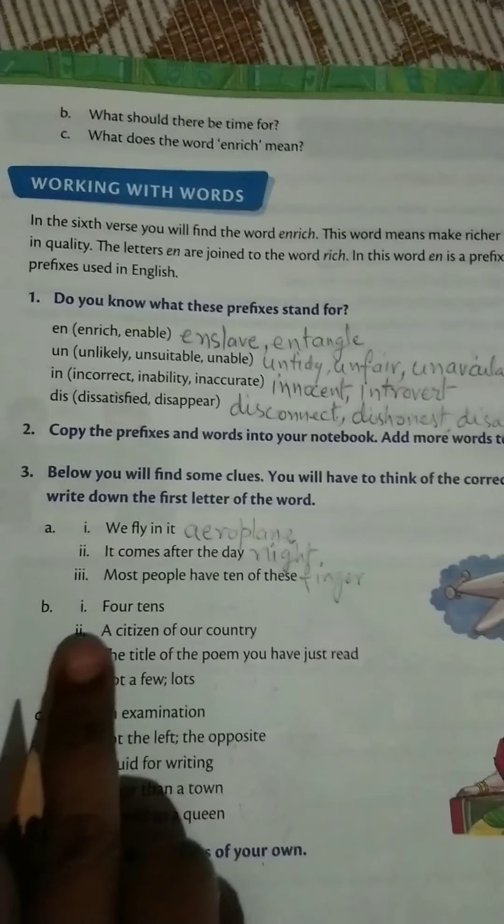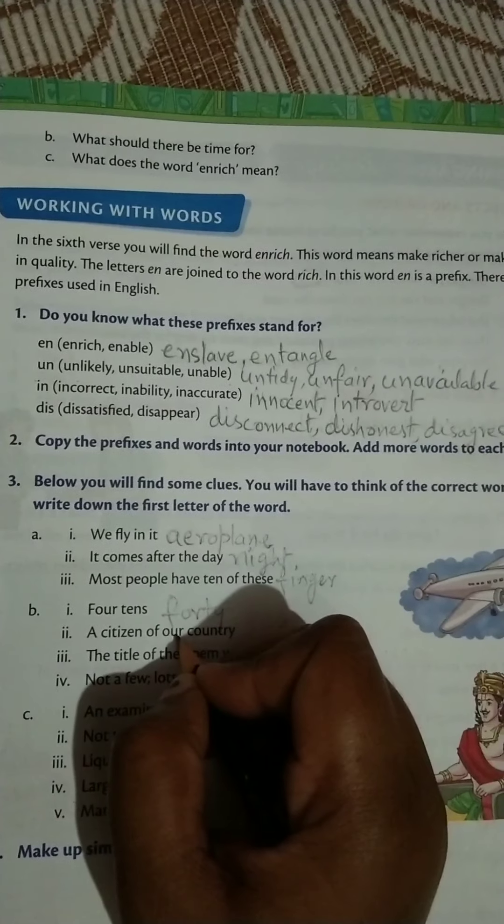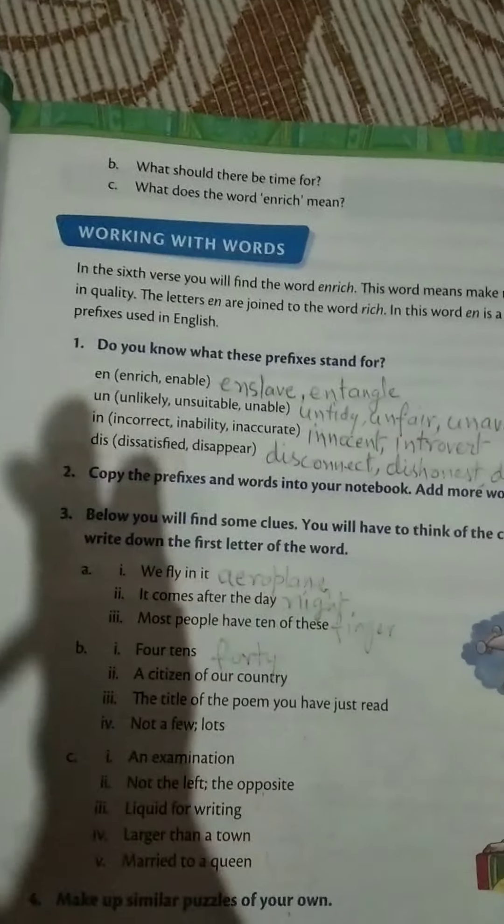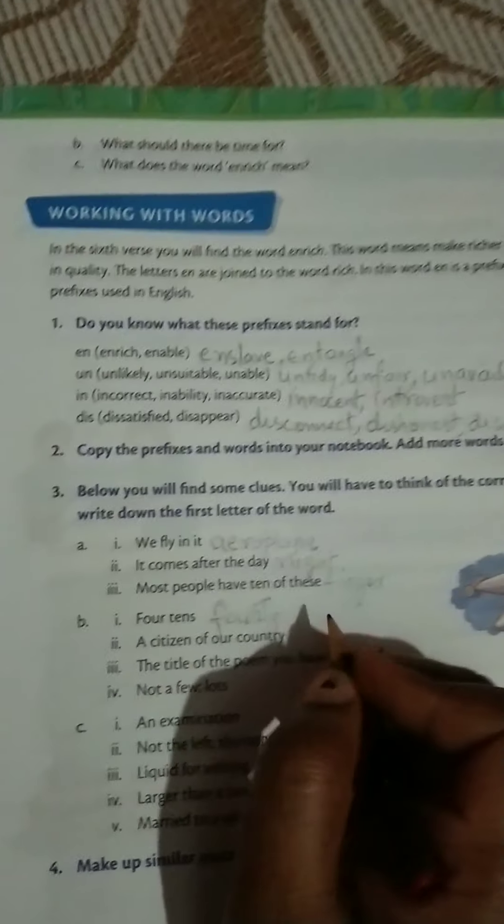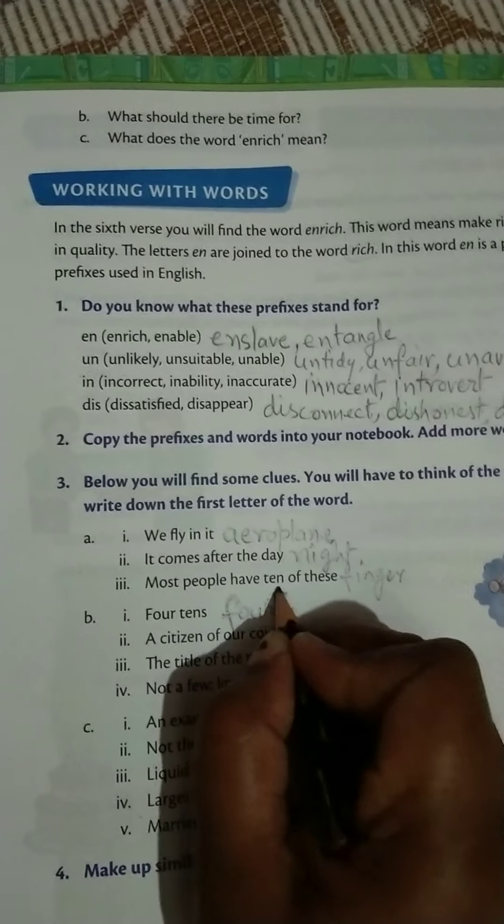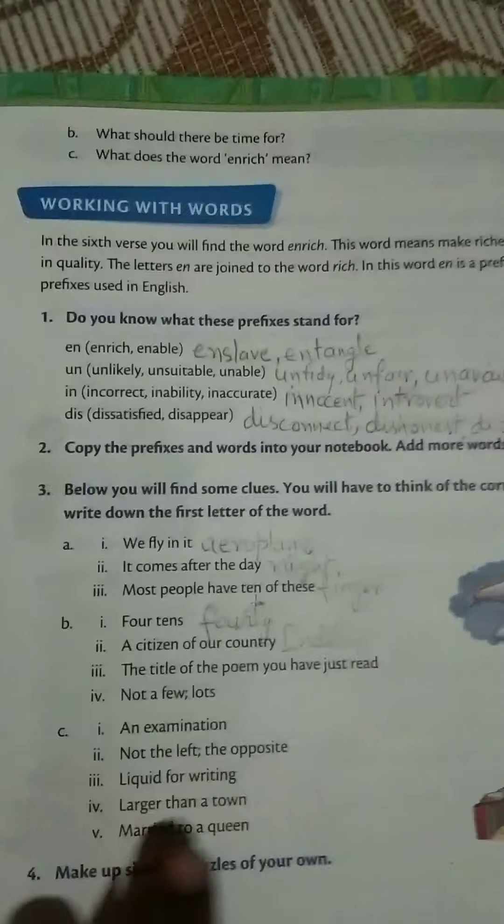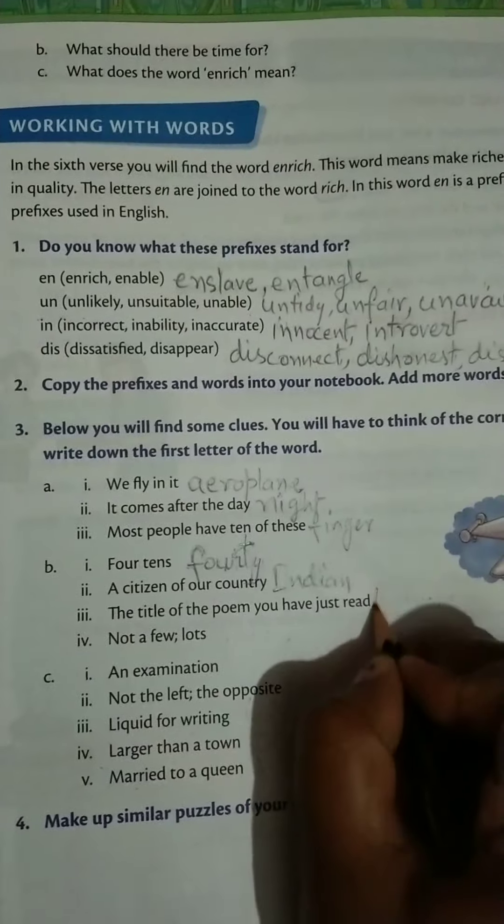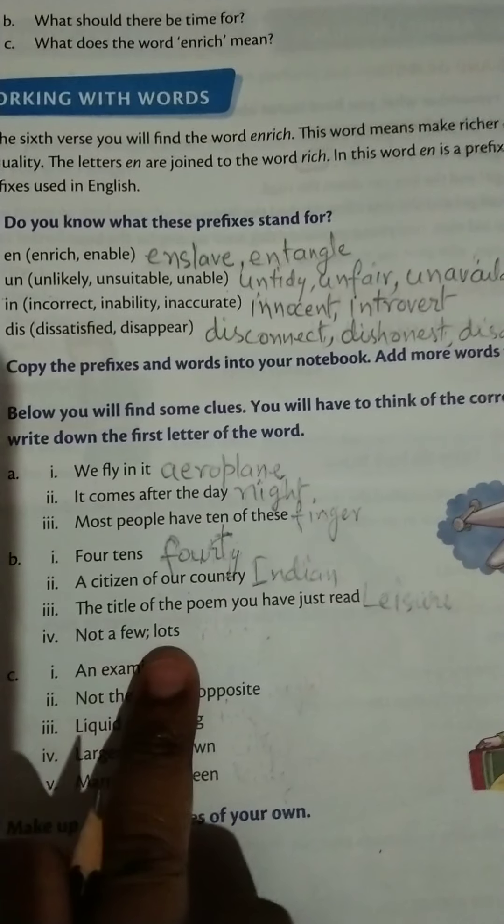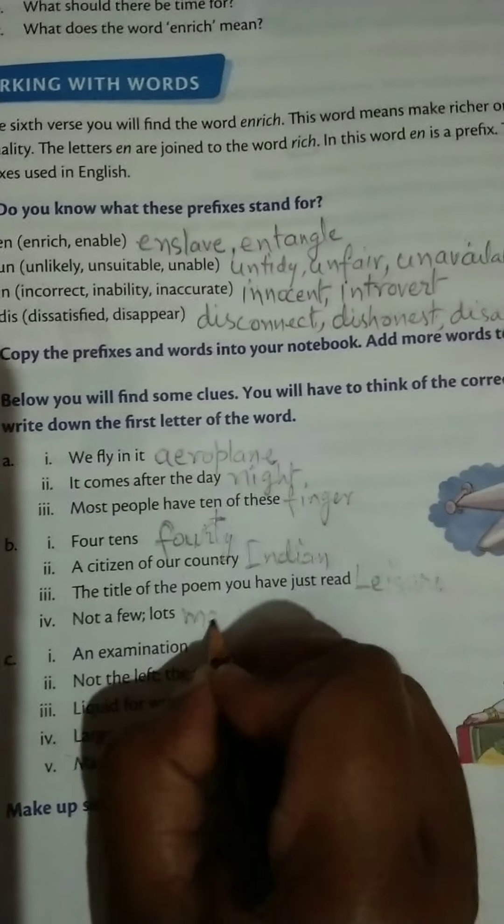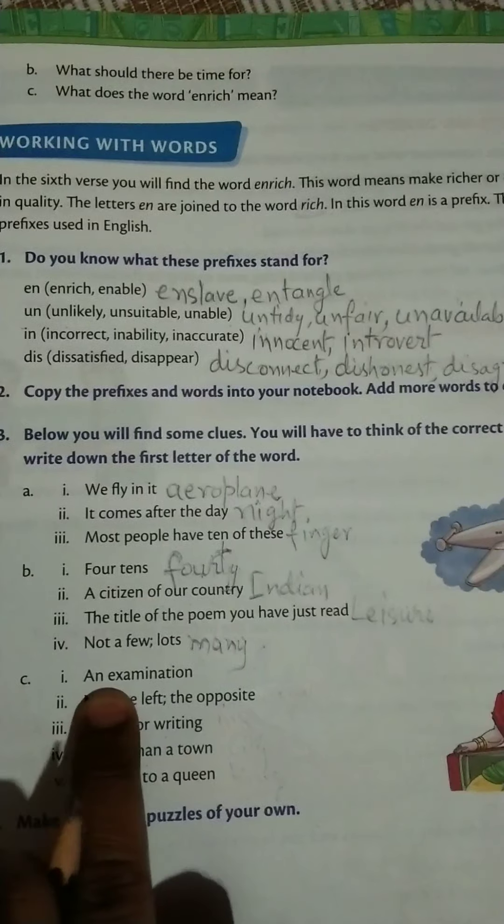Come to the next: four tenths, it is forty. Next, a citizen of our country - it is Indian, he is Indian or she is Indian. The title of the poem you have just read - it is Laser. Next is, not a few lots - it is many. An examination - it is test.